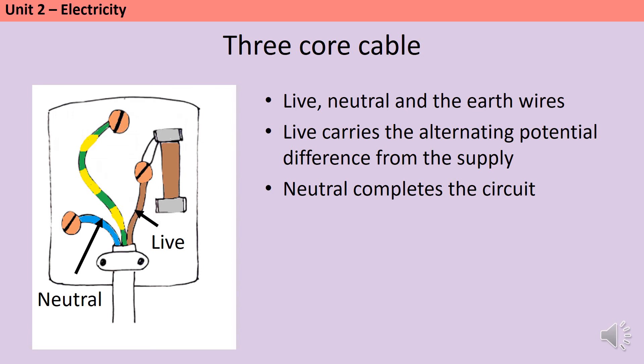The earth wire is the green-yellow stripy one in the middle, and it's a safety wire that stops the appliance from becoming live. This is particularly important if you have an appliance with a metal casing. If the live wire were to become detached and it touched that metal casing, then the entire casing could become electrified, and it would be possible for you to become electrocuted if you touched it. The earth wire provides a low resistance path to the ground, and there's normally no current flowing through it.